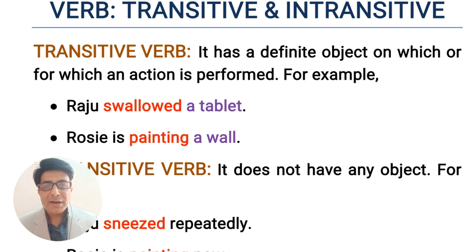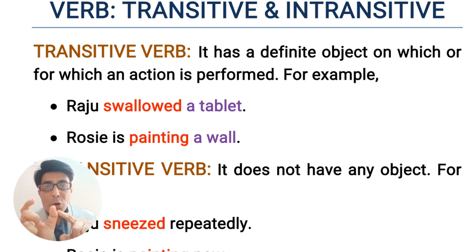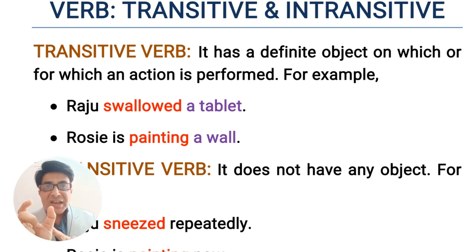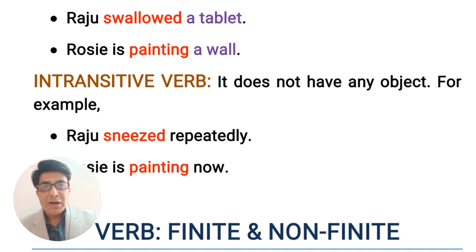In the same manner, 'Rosie is painting a wall.' Here, the verb is 'painting,' which is followed by a noun or an object — a wall. That's why the verb which takes an object is known as a transitive verb. So painting is also a transitive verb.